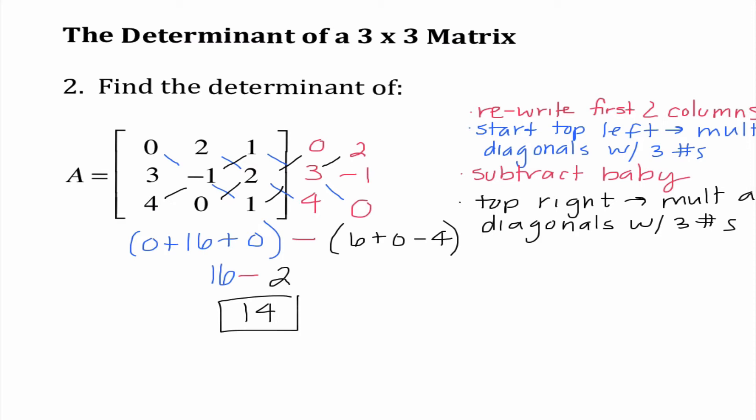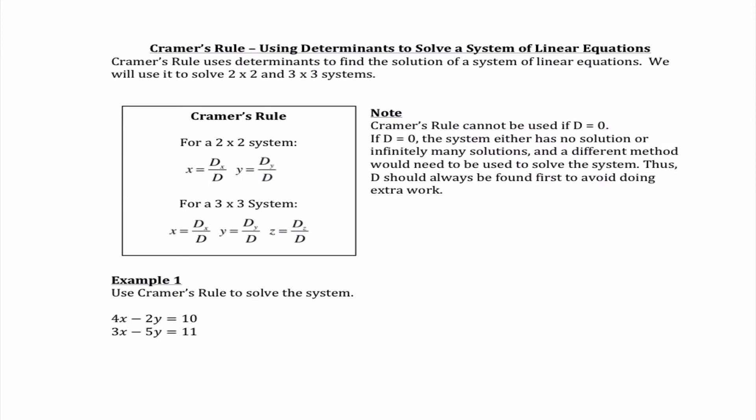Now we're going to do two simple examples demonstrating how we can use these to solve a system. Cramer's Rule is the final thing we are learning — it is a method that uses determinants to find the solution of a system of linear equations. For a 2 by 2 system, x equals D sub x divided by D, y equals D sub y divided by D. For a 3 by 3, we also need D sub z divided by D. If D equals zero, that means no solution or infinitely many solutions, so I always find D first.